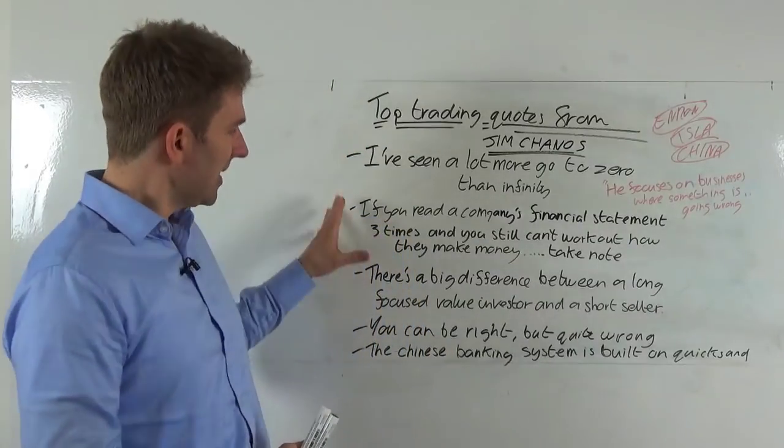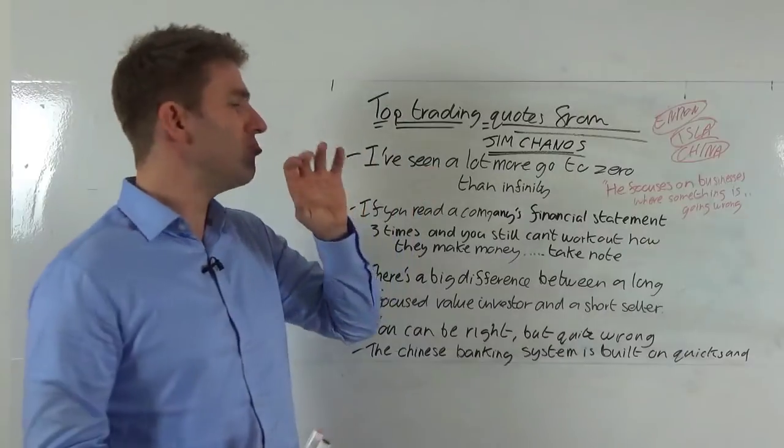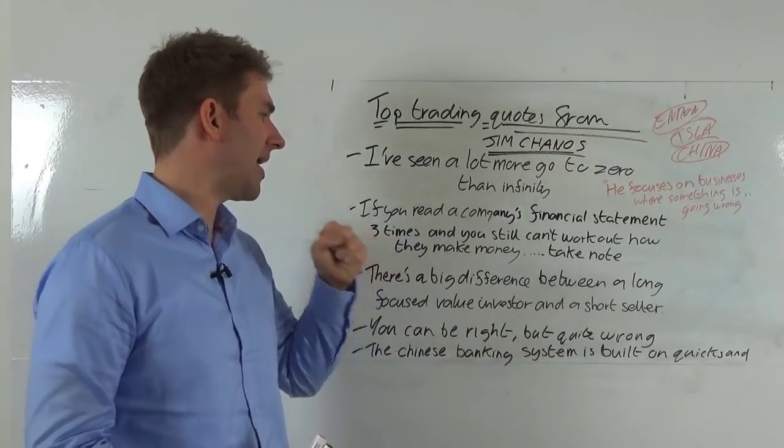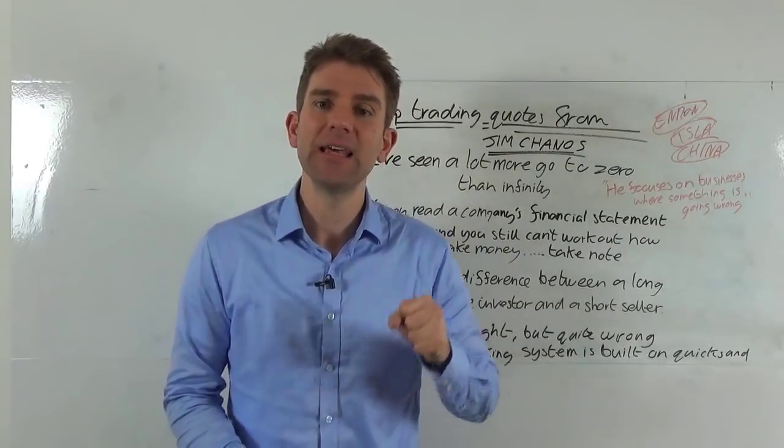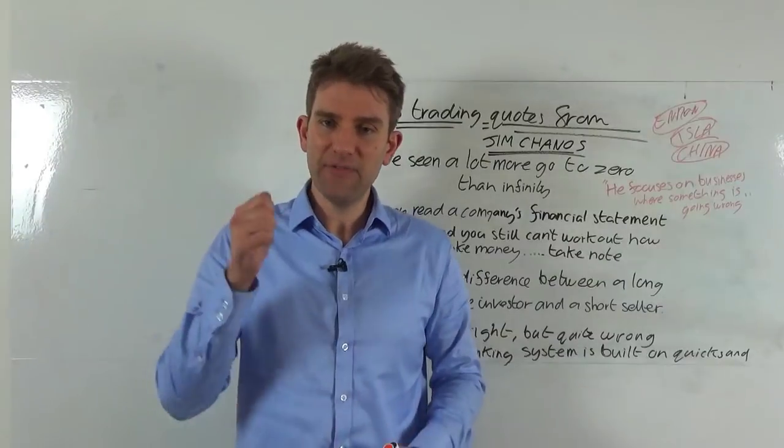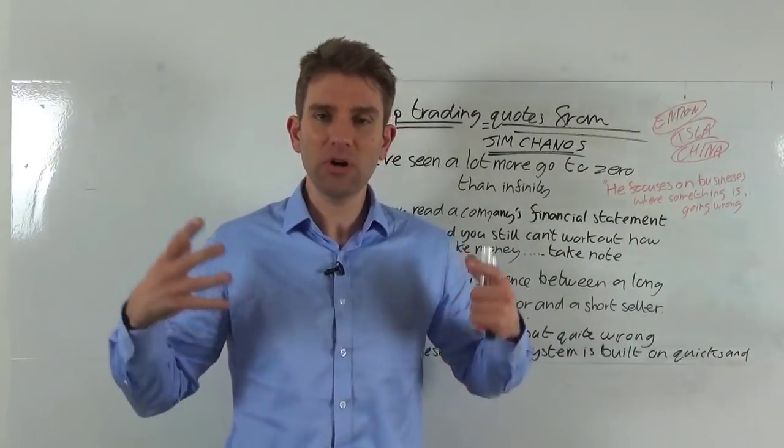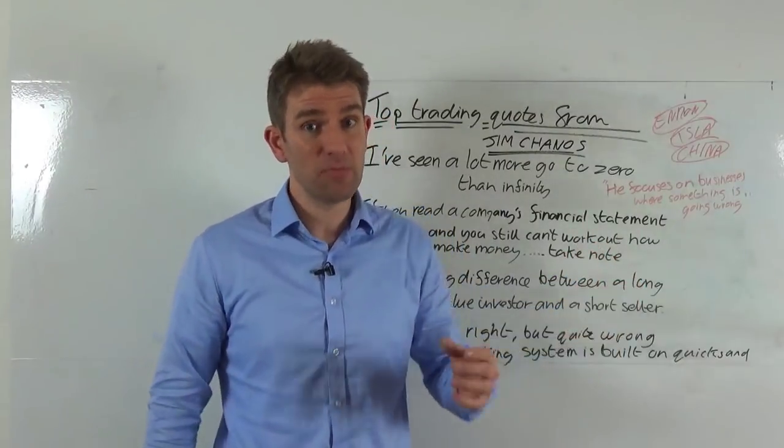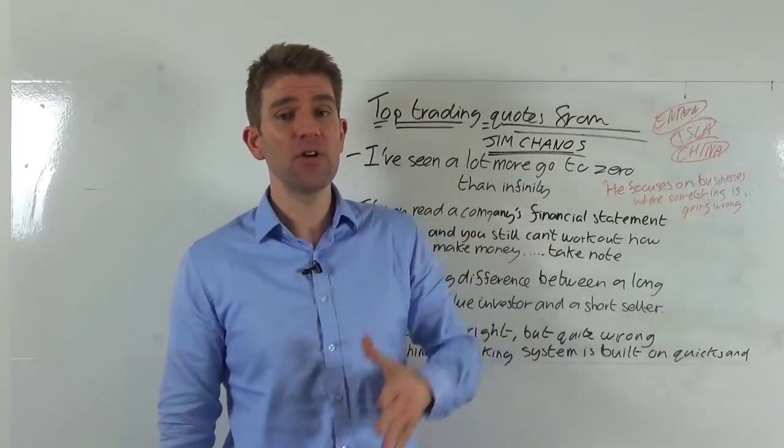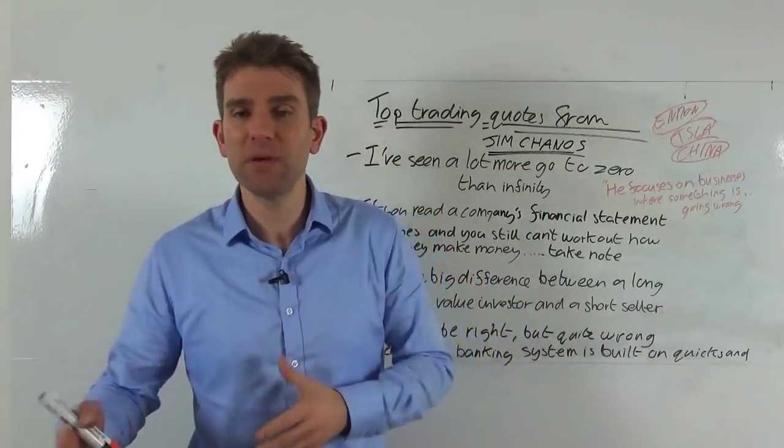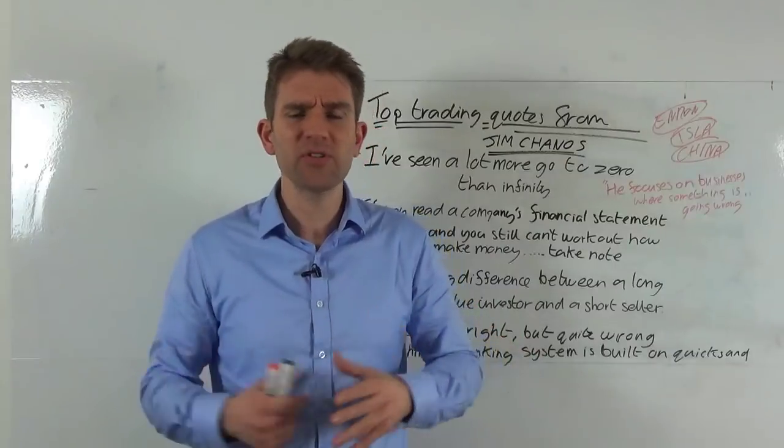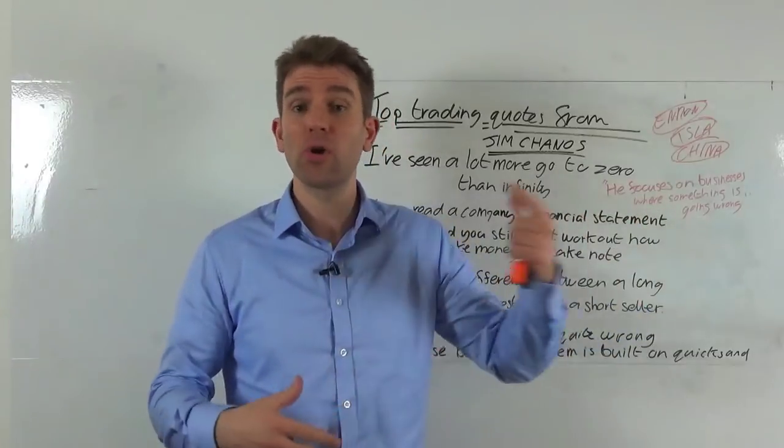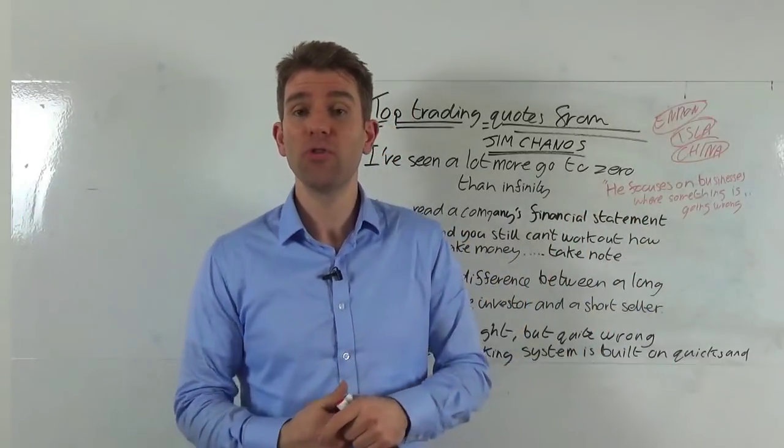All right next one this is a long one but let me read it to you. If you read a company's financial statement three times and you still can't work out how they make money then take note. In other words if you read it you read it again read it a third time and you still don't know how they make money you need to be aware and I assume what he's saying there is this might be a potential short opportunity. If it's not clear and obvious how their money's come in if it's not got an obvious business model or looks a little bit suspicious maybe then it's time to do a bit more digging. So if you're a short seller from a longer time frame and you're looking for these longer term shorts that might be a good thing to do.